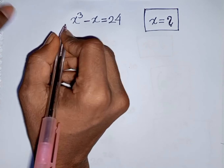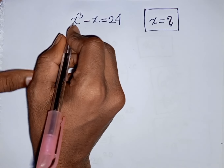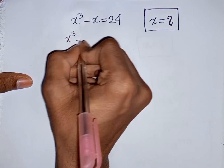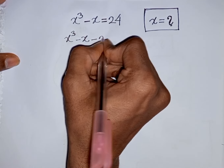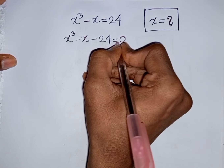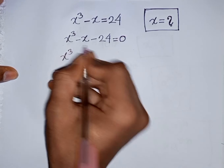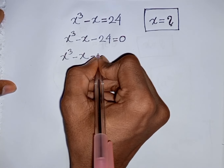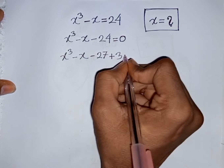How to solve x power 3 minus x is equal to 24. Find the value of x. We have x power 3 minus x, then take plus 24 to the left side, so this will be minus 24, giving us x cube minus x minus 24 is equal to 0.